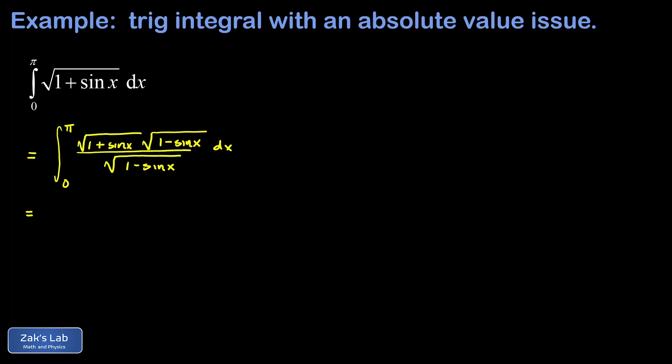That conjugate is the square root of 1 minus sine x. Again, the whole point of this is to intentionally build a difference of two squares.